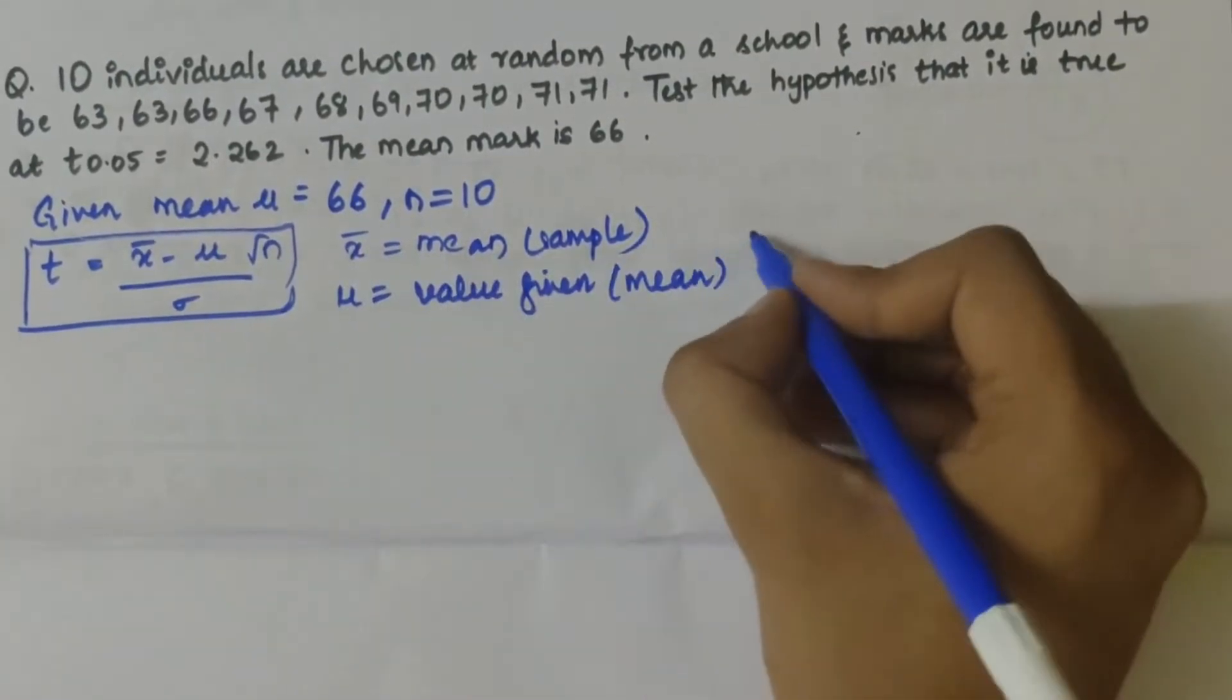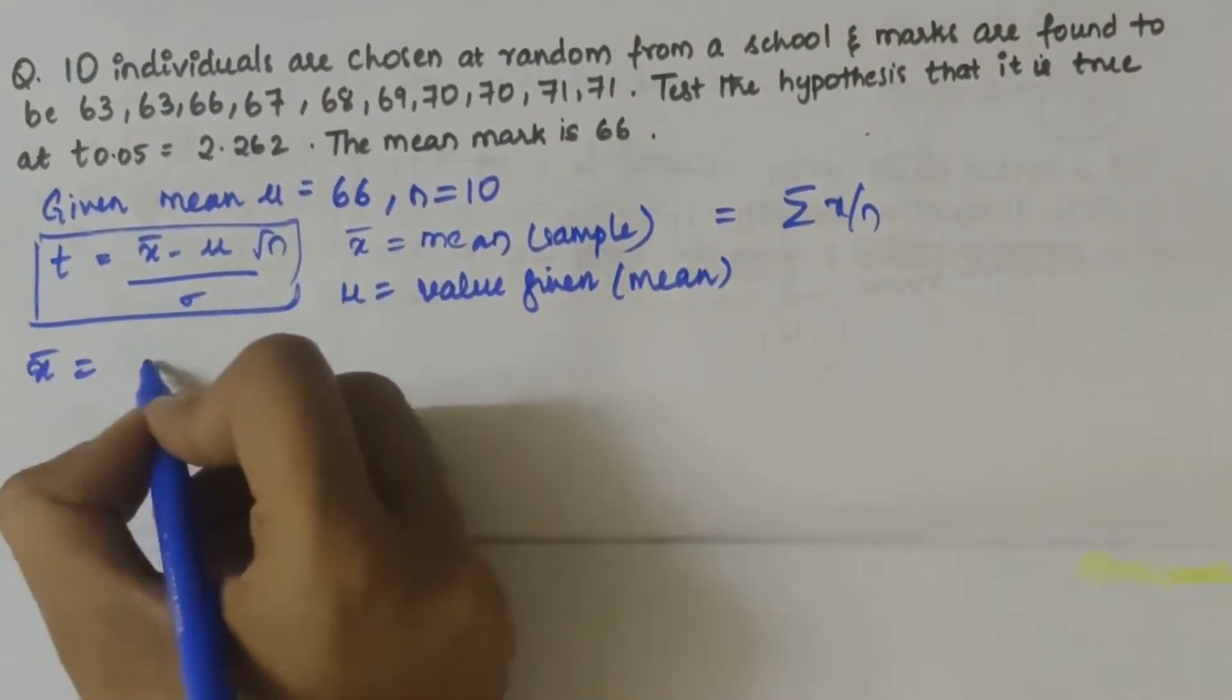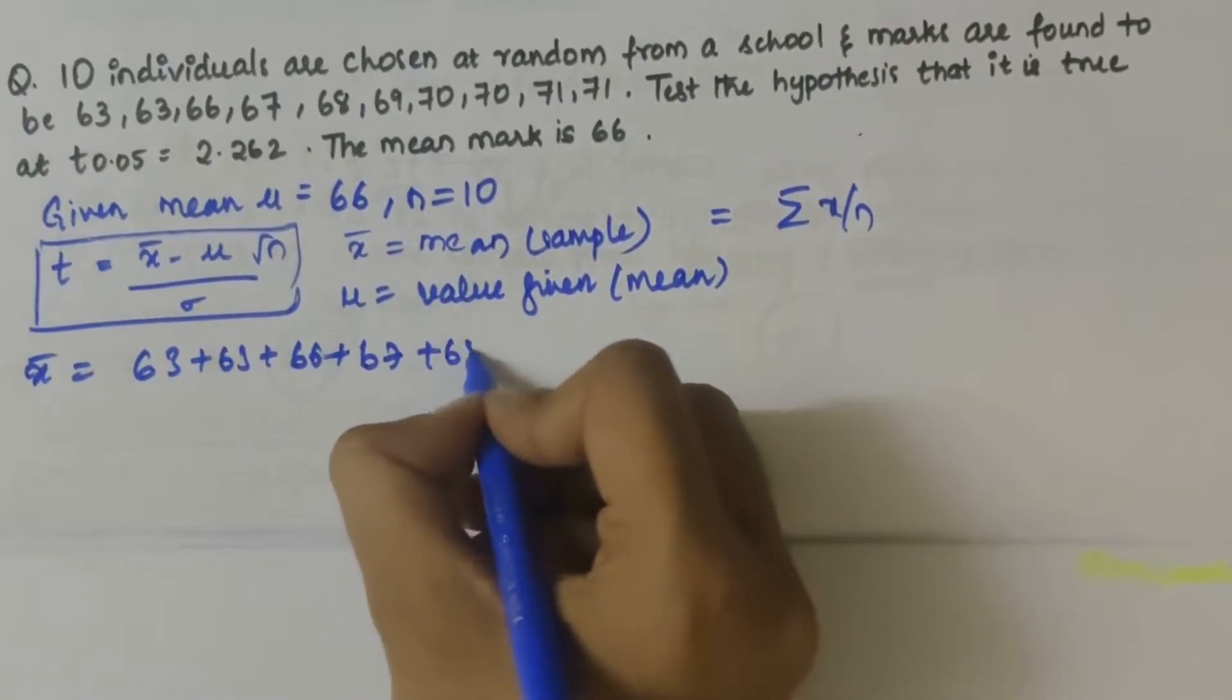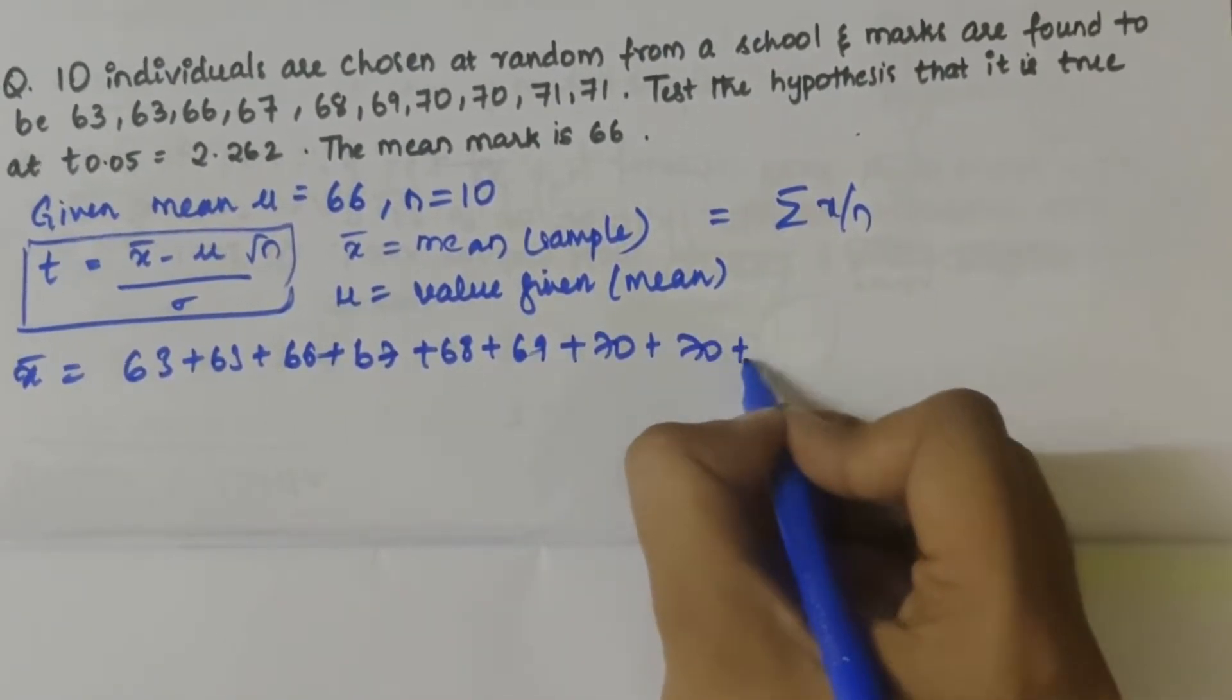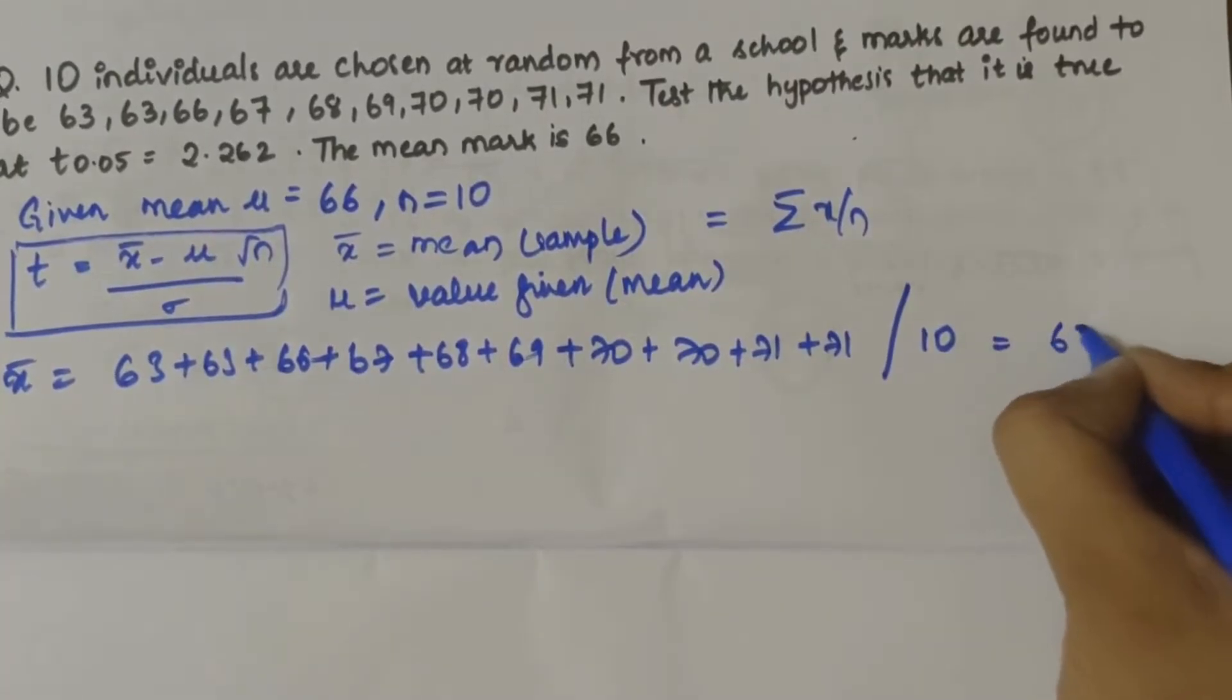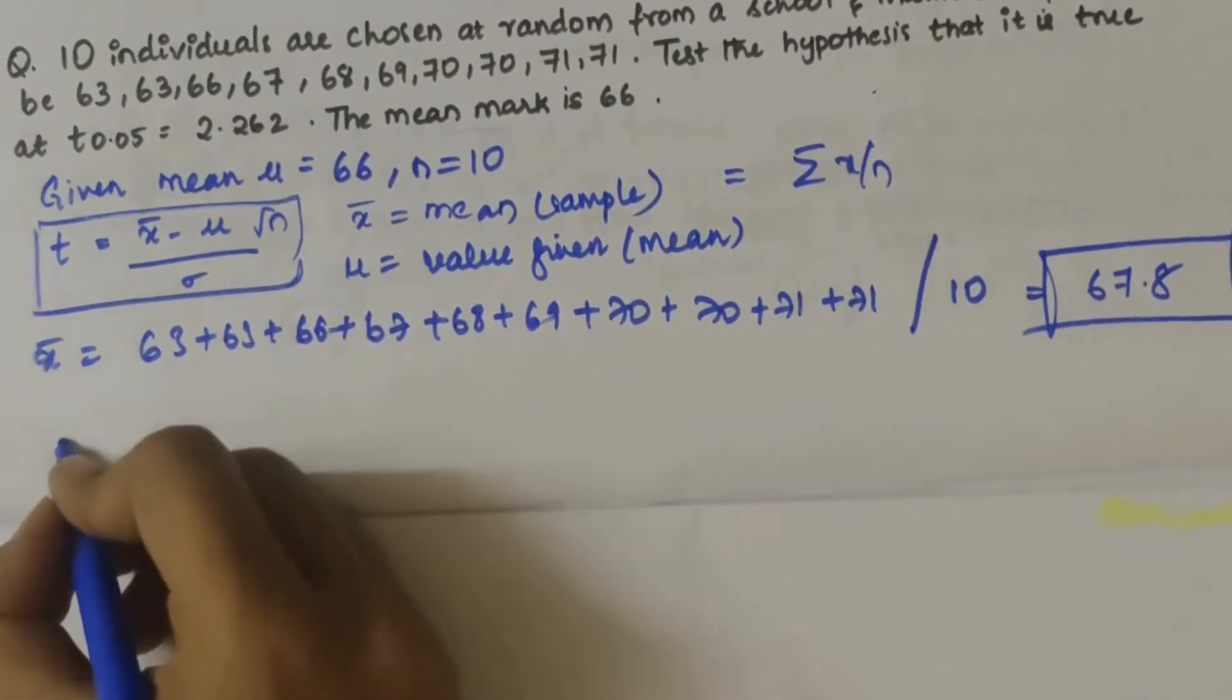x̄ value we have to calculate, that would be summation of x by n. So x̄ would be 63 plus 63 plus 66 plus 67 plus 68 plus 69 plus 70 plus 70 plus 71 plus 71, all divided by 10. If you add all of this and divide by 10 you get 67.8, and that is the x̄ value.